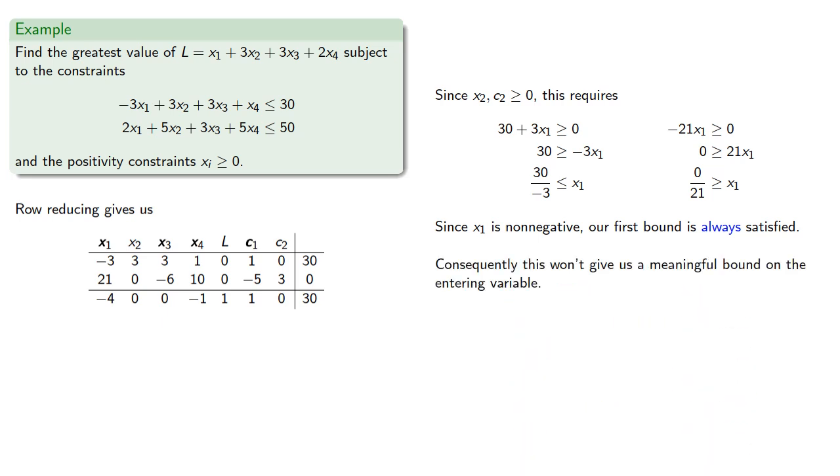Consequently, this won't give us a meaningful bound on the entering variable. The second will give us a meaningful bound, so we'll use the second row as our pivot, making c2 our exiting variable and new free variable.